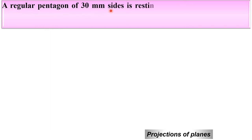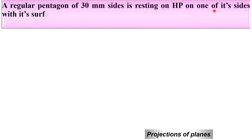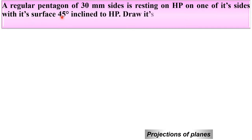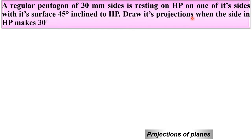A regular pentagon of 30 mm sides is resting on HP on one of its sides with its surface 45 degrees inclined to HP. Draw its projections when the side in HP makes 30 degree angle with VP.